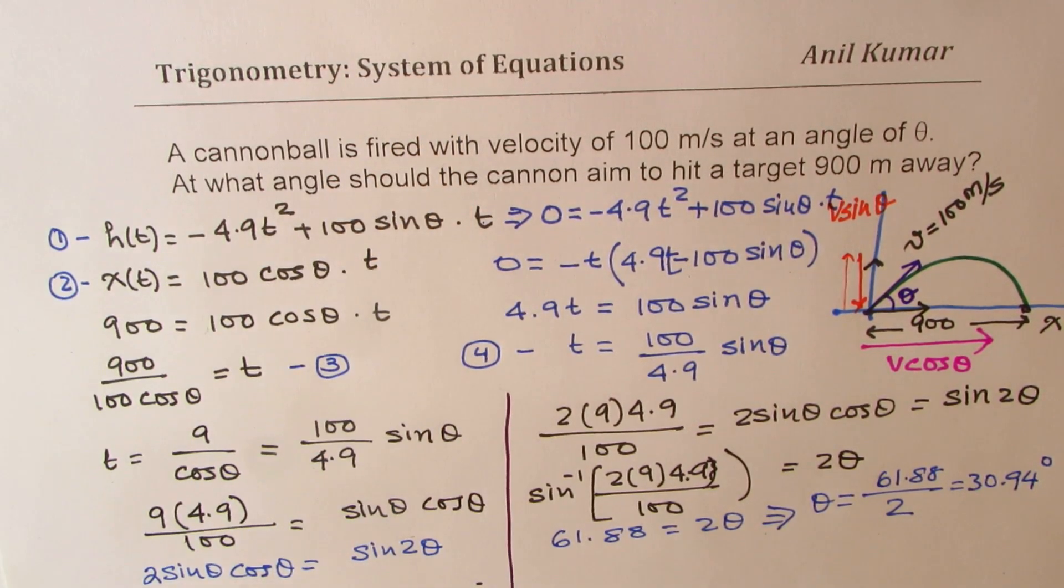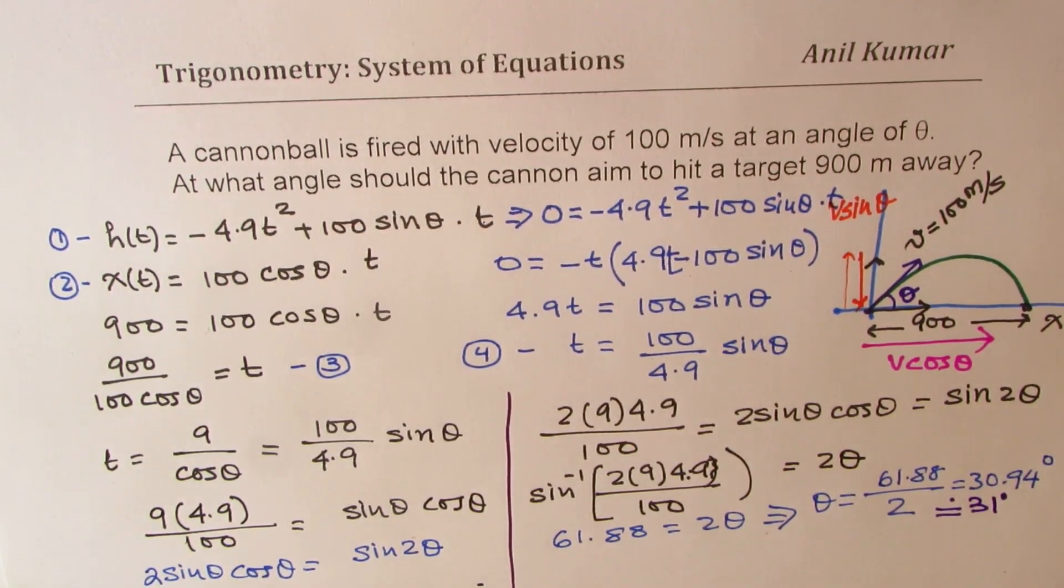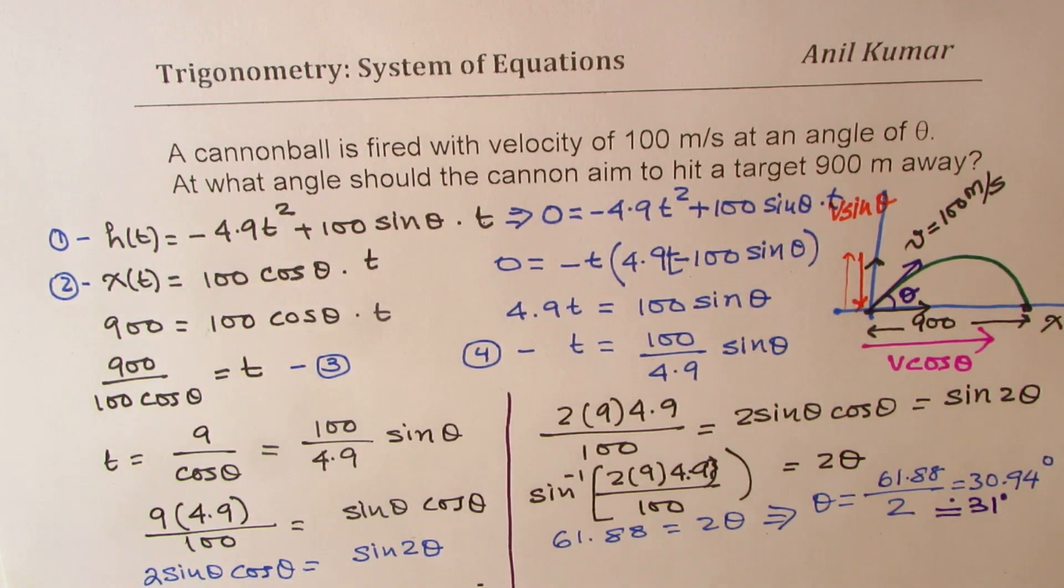So that becomes the solution of the given equation. We can round this to approximately 31 degrees. Is that clear? So that is how we can solve such a question. So we get angle as 31 degrees.